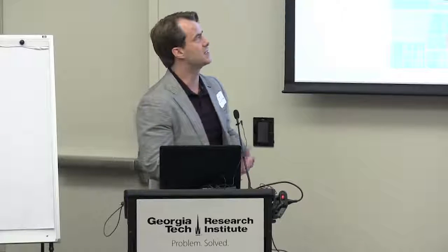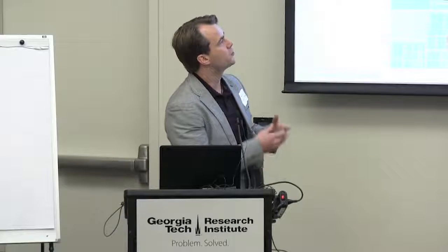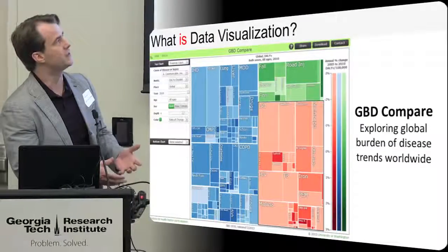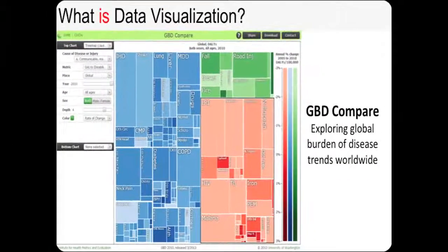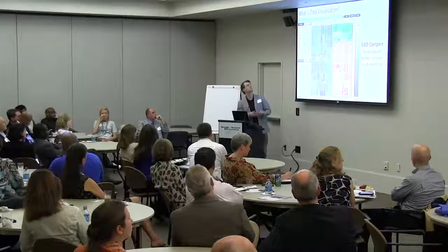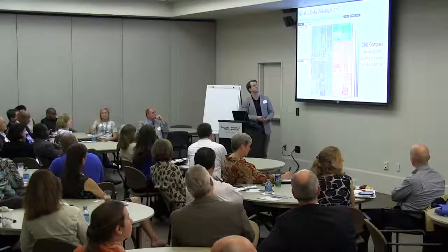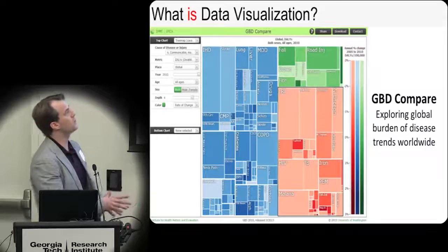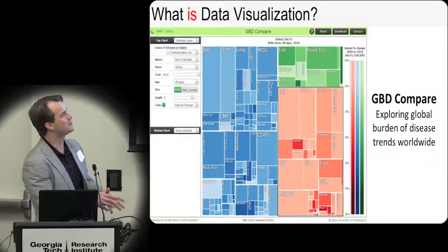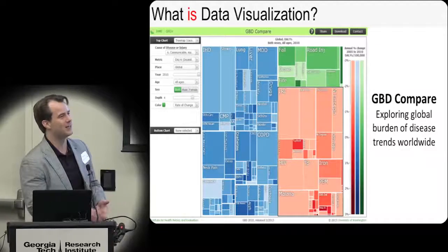Blue is non-communicable diseases — things like lung disease and liver disease. Red are communicable diseases, like HIV and malaria. And in the upper right, we have injuries — things like road injuries, accidents, or fire. There are things we're able to do with a system like this that are very difficult to do with numbers. If we wanted to compare lung disease to liver disease, it's very easy to get a sense of the area difference and see that there are actually more cases of lung than liver disease. It also lets us see that there's a much larger number of communicable diseases worldwide than non-communicable diseases.